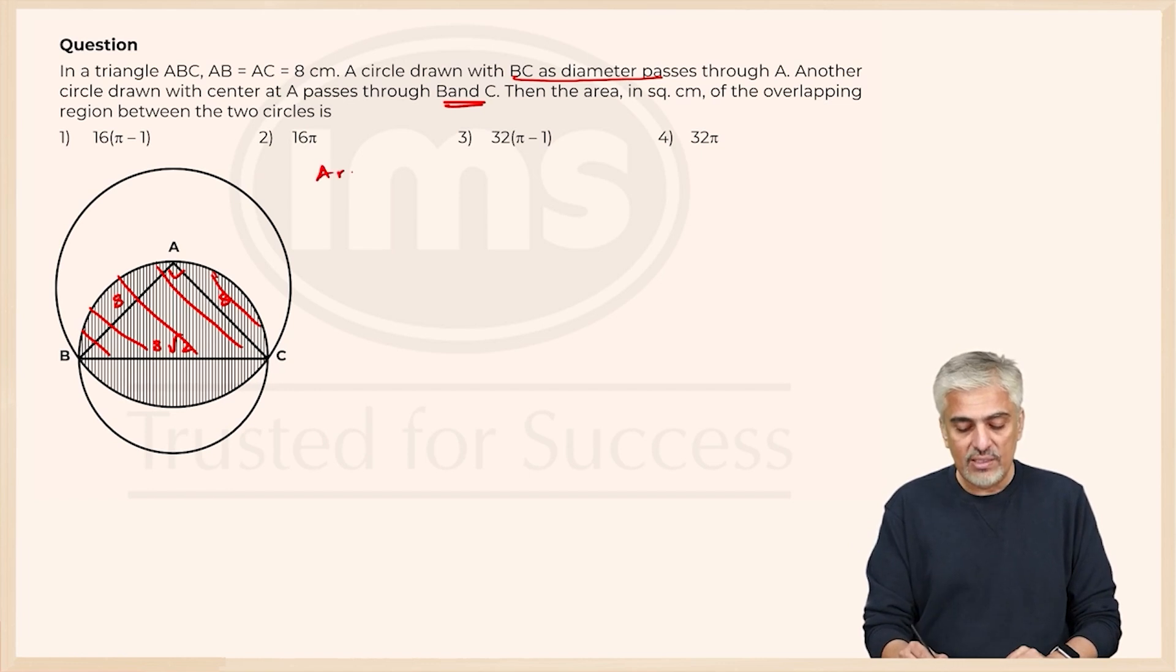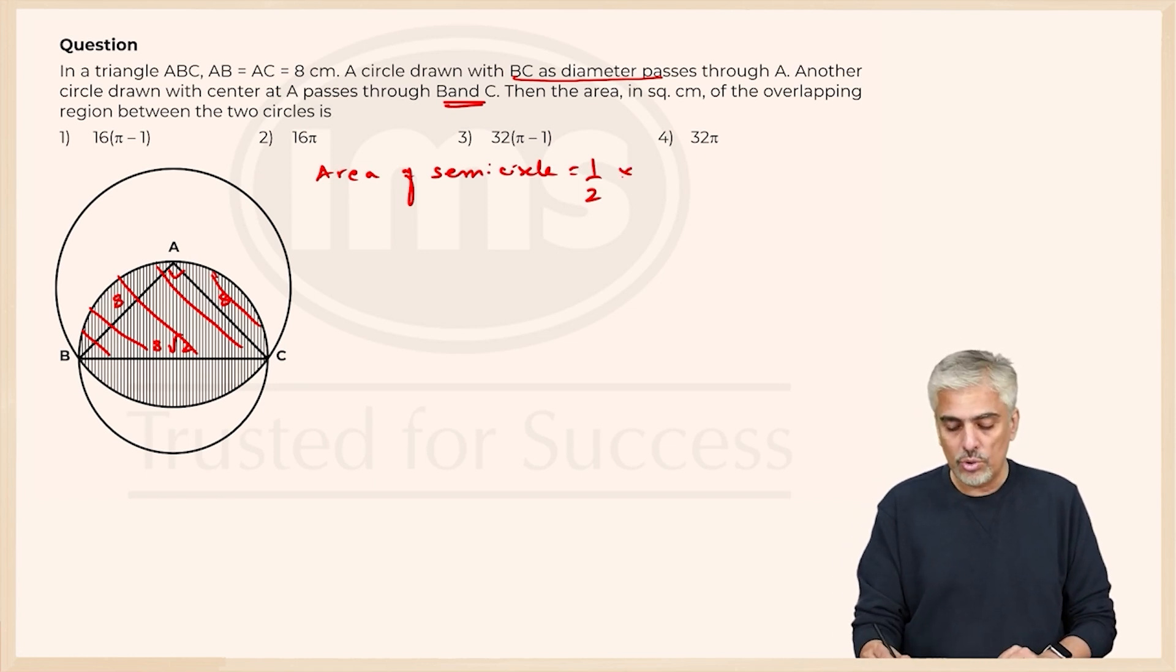So area of the semicircle will be very straightforward. What is the area of a semicircle? Half pi r square. So that will be straightforward. We already know diameter. Diameter is 8 root 2. So your radius will be 4 root 2. So half into pi into 4 root 2 into 4 root 2. Root 2 into root 2 is 2 that will cut over here. 4 times 4 is 16. So we've already got 16.